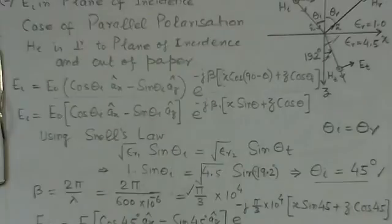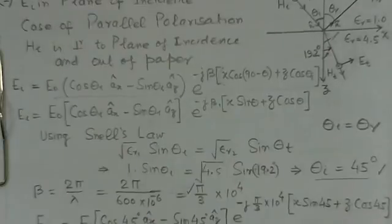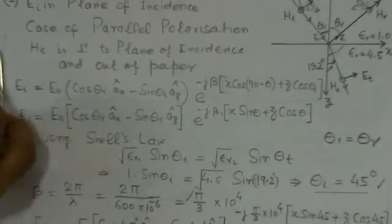Now we can write this expression for E_I: E_0 cos 45°. This simplifies to E_I = E_0/√2 (A_x - A_z) e^(-jπ × 10^4(x+z)/3√2). And this is corresponding to option C of this problem.